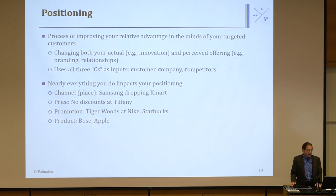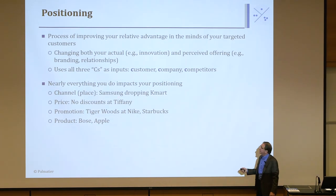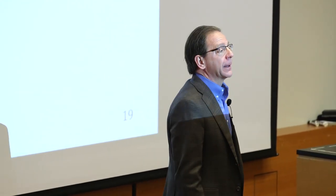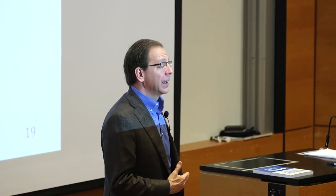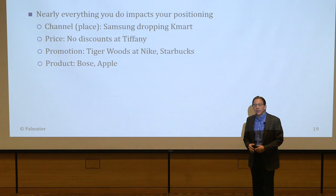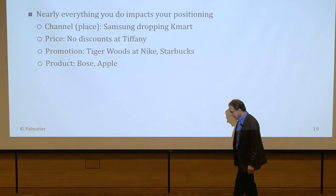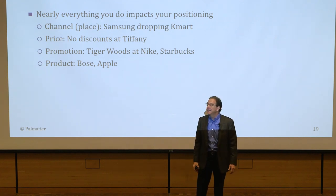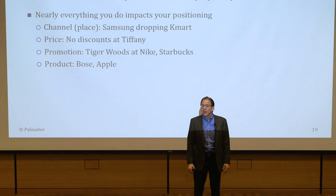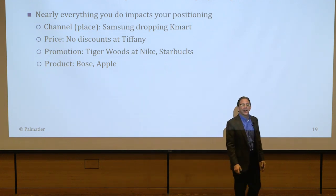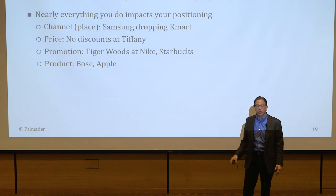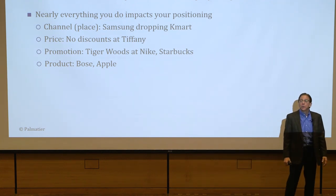Nearly everything you do impacts your positioning. Samsung, an electronic manufacturer from Korea, wanted to increase its position targeting a higher-end electronics segment wanting high-quality, high-performance products. Samsung wasn't seen that way in customers' minds. First they fixed their product, but they also realized they were selling through Kmart — not seen as a high-end retailer. If they wanted a high-end image, they could no longer sell through Kmart. They dropped Kmart, even though it hurt their sales initially, because it didn't fit their image.